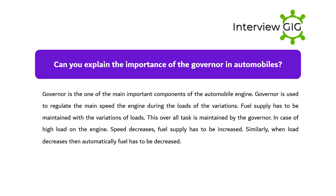Can you explain the importance of the governor in automobiles? The governor is one of the main important components of the automobile engine. It is used to regulate the main speed of the engine during load variations. Fuel supply has to be maintained with variations of load, and this overall task is maintained by the governor. In case of high load, speed decreases and fuel supply has to be increased. Similarly, when load decreases, fuel supply has to be decreased automatically.